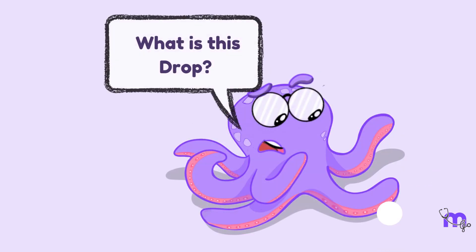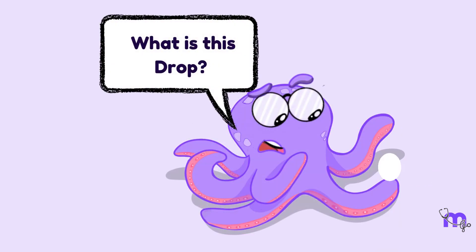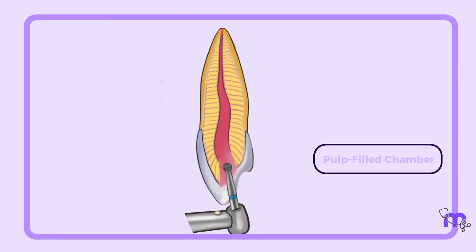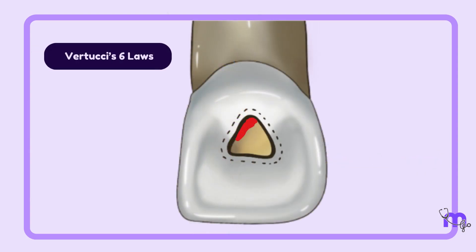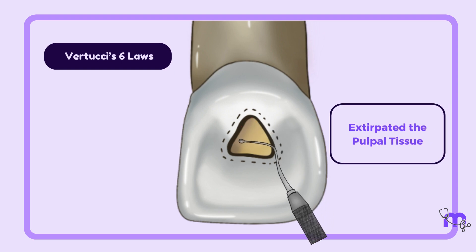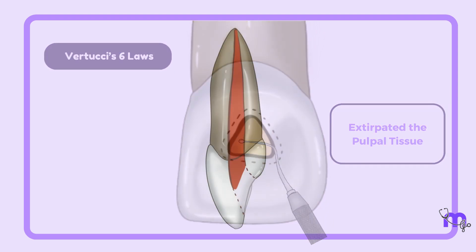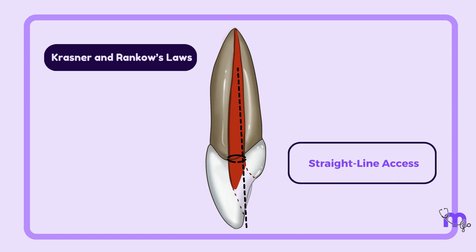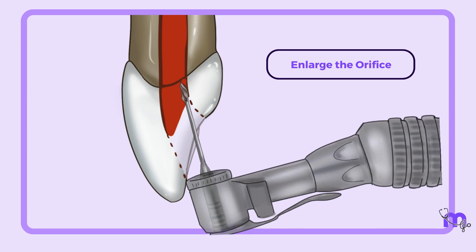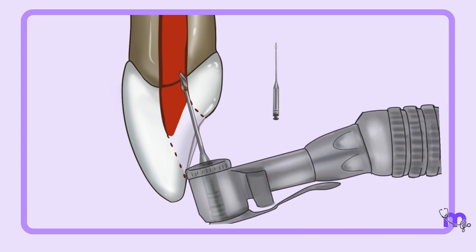What is this drop? It is the dip of the burr into the pulp-filled chamber that indicates its entrance. While following Bertucci's six laws diligently, I extirpated the pulp tissue from the chamber. Following Karsner and Rankow's laws, I was able to locate the single orifice and achieve a straight-line axis into the root canal, then enlarge the orifice using Gates' Glidden drill.